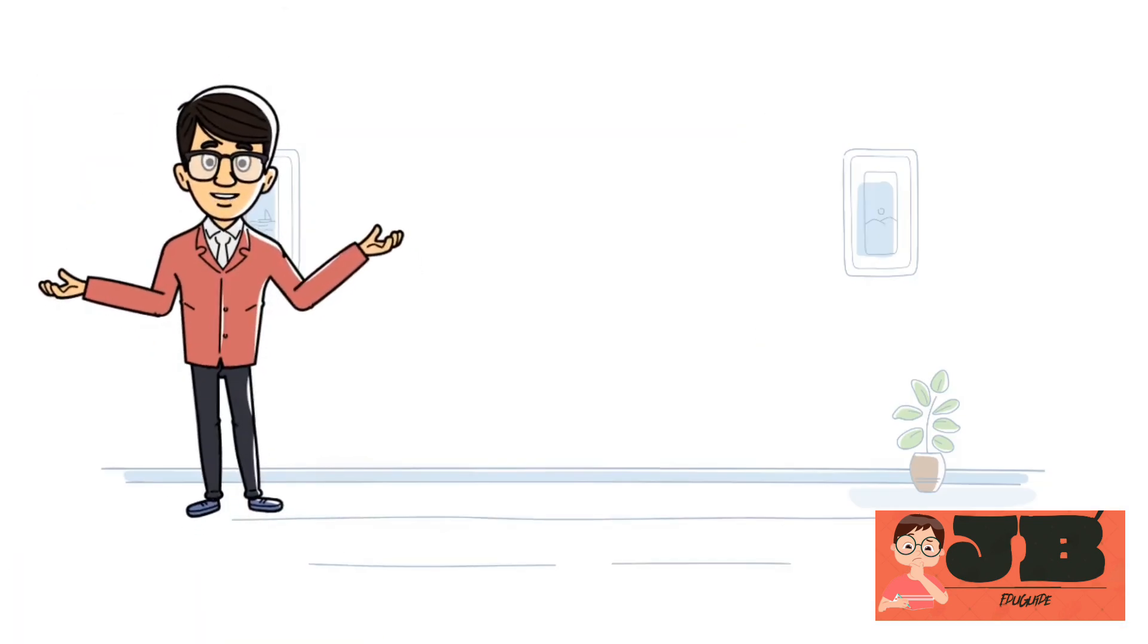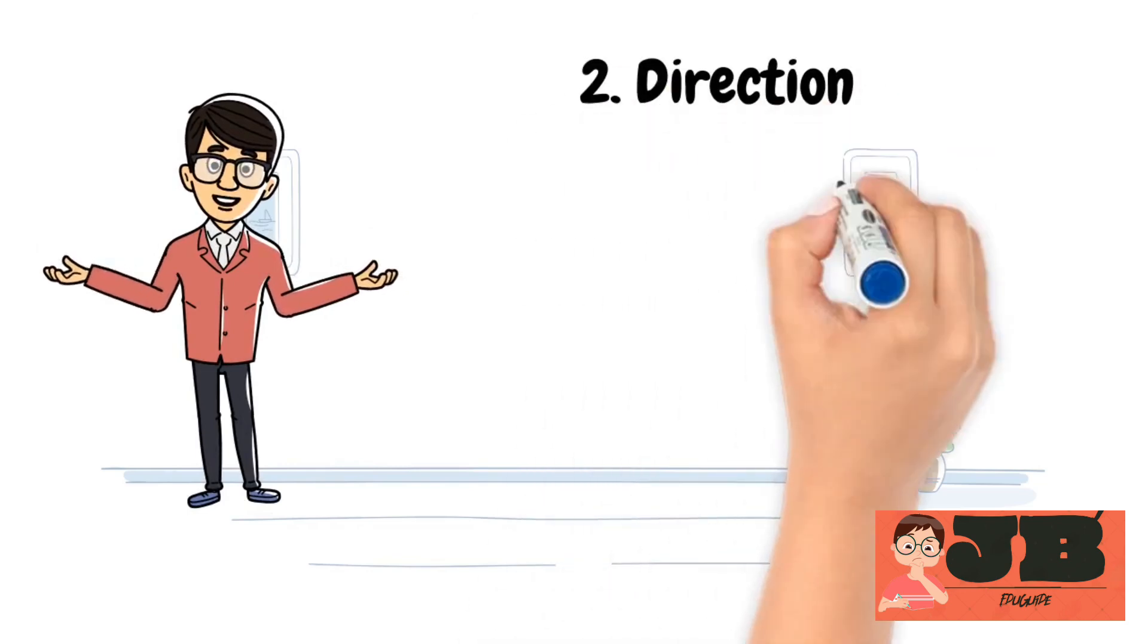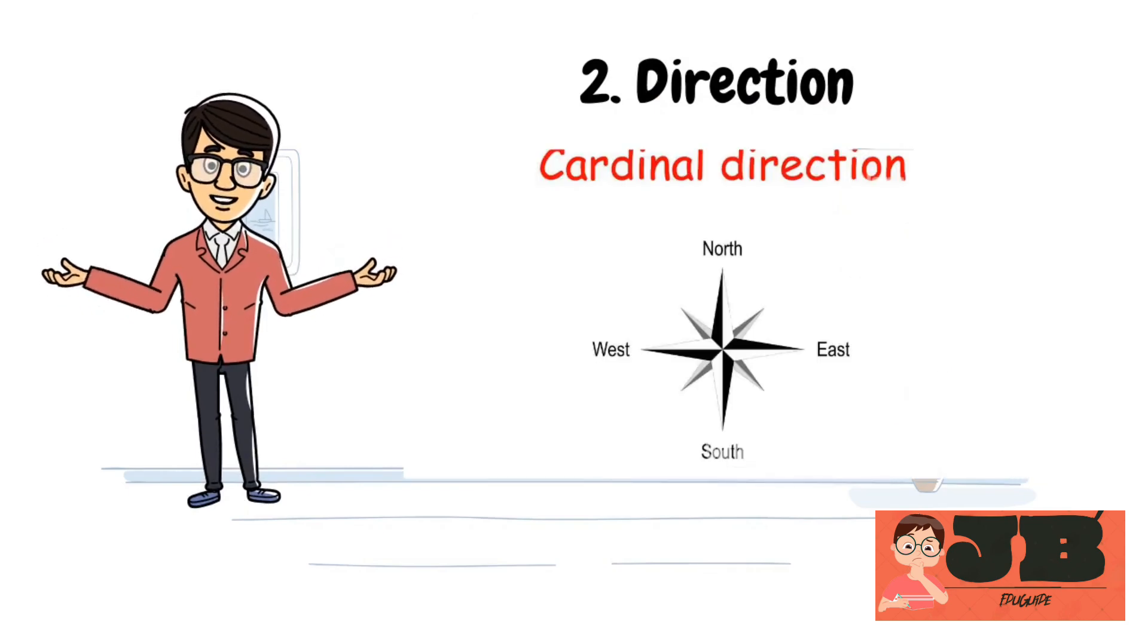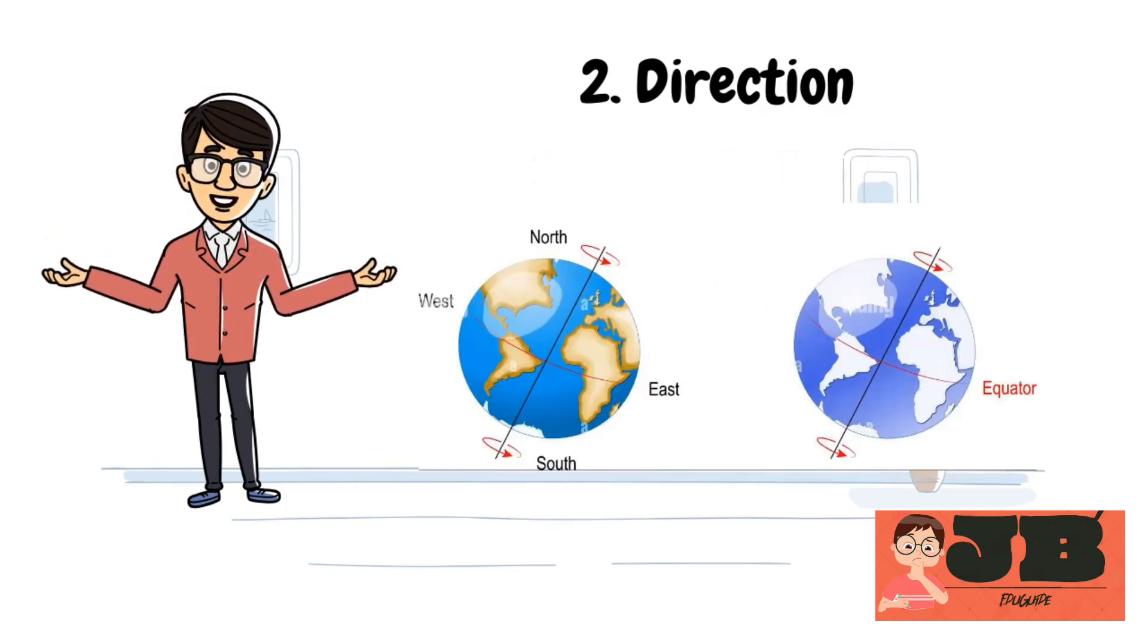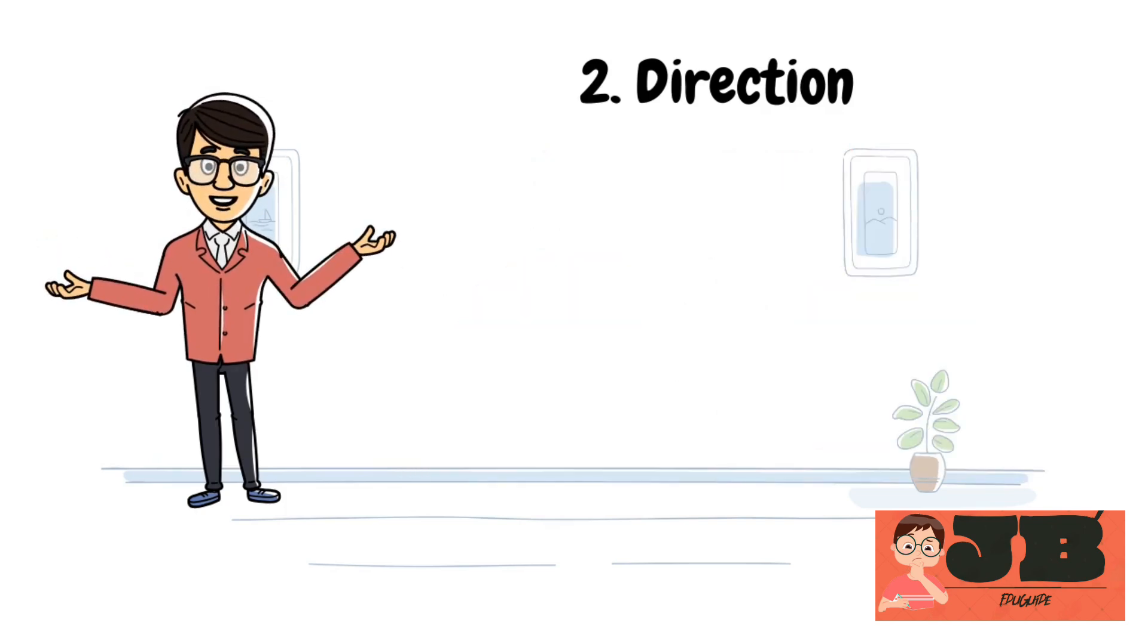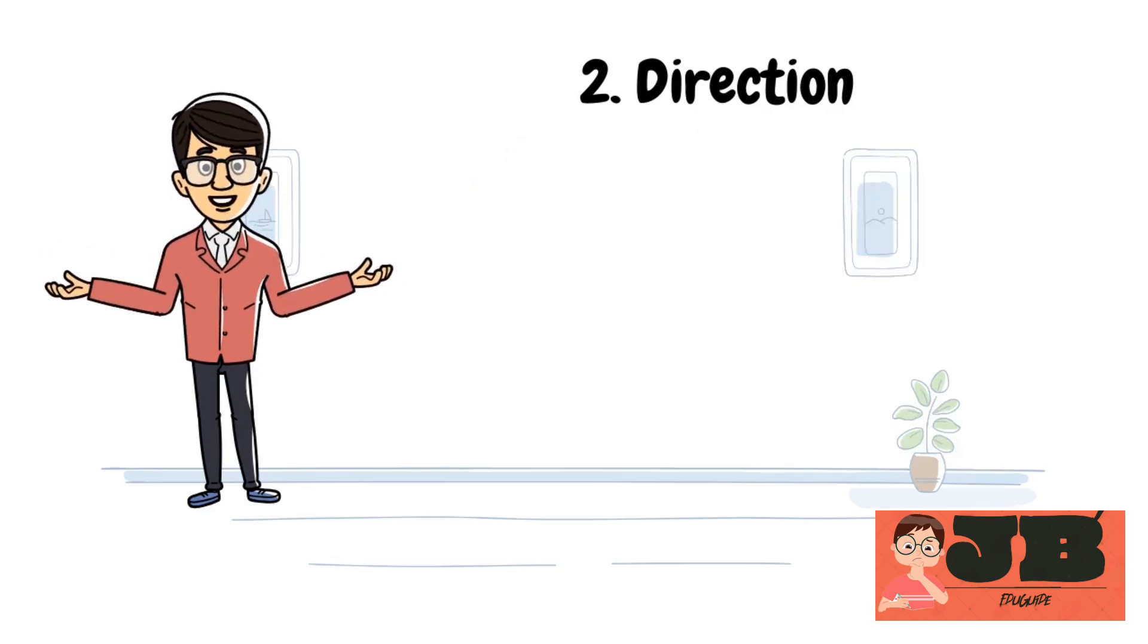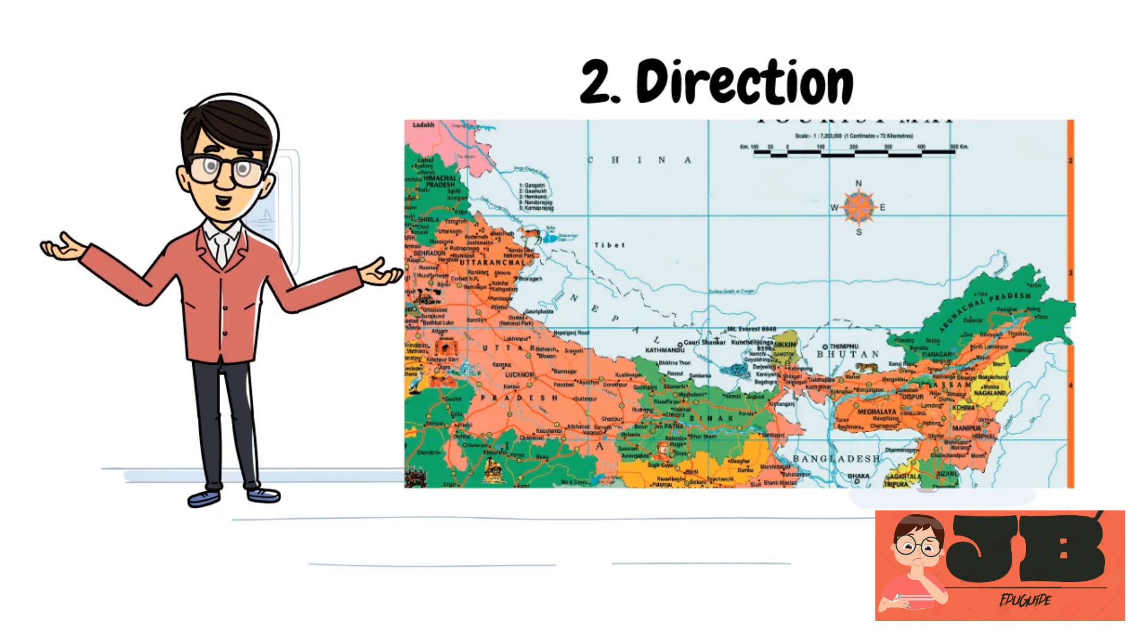Next come to the second component of map: direction. Most important part of the map is direction. Map uses two types of direction. First, cardinal direction, like east-west-north-south. You can see in every map. Second, intermediate directions, like north-east, south-east, south-west, north-west. Most maps have a north arrow to indicate the direction of north.